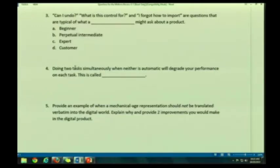Three. Can I undo? Oh, we haven't talked about this. We'll skip that one. That, by the way, is from the beginners, experts, and intermediates lecture. Actually, let me just talk about it really quickly. This is an example of the type of information you need to know. It's applied. Can I undo? What is this control for? And I forgot how to import. I'm asking you what type of user would typically have these types of questions. Now, I don't expect you to know the answer yet, since you have not seen that lecture. But it tends to be the intermediate. But watch the lecture. But this will just give you an idea of the type of question.